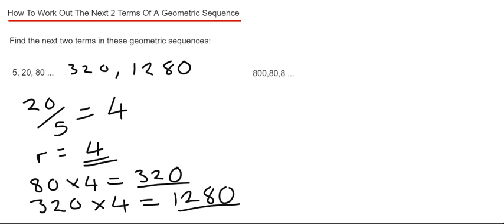Let's move on to example 2. This time we've got 800, 80, 8. So it's a decreasing geometric sequence. Again, if we work out our common ratio by dividing the second term by the first term.